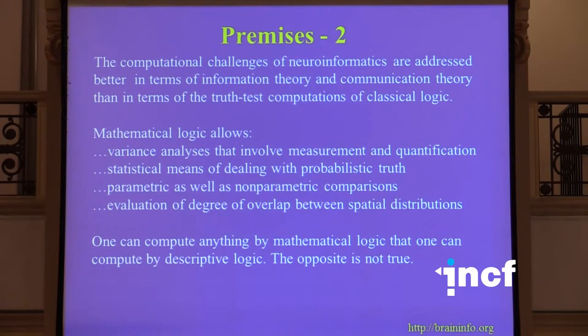Informatics requires that the information be made machine computable and unambiguously human interpretable. The computational challenges of neuroinformatics are addressed better in terms of information theory and communication theory than in terms of the truth-test computations of classical logic.